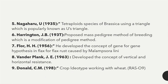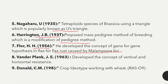Nagaharu described the tetraploid species of Brassica using a triangle known as the U-triangle. Harrington proposed the mass pedigree method of breeding, a modification of the pedigree method. Flor developed the concept of gene-for-gene hypothesis in flax for flax rust caused by Melampsora lini. Van der Plank developed the concept of vertical and horizontal resistance, and Donald described the crop ideotype concept working with wheat.